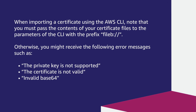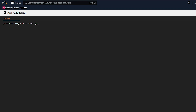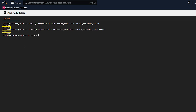When importing a certificate using the AWS CLI, note that you must pass the contents of your certificate files to the parameters of the CLI with the prefix as shown on screen. Otherwise, you might receive error messages such as 'the private key is not supported,' 'the certificate is not valid,' or 'invalid B64.' If ACM can't map the certificate to the certificate chain provided, then you must confirm that the certificate chain is associated with your certificate by validating that the issuer hash of the certificate matches the subject hash of the certificate chain using the OpenSSL command.